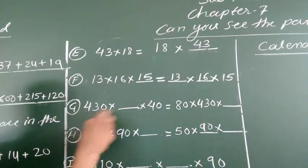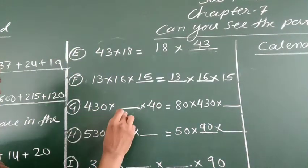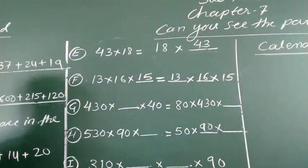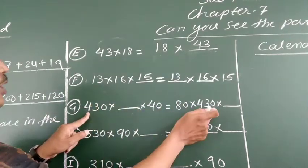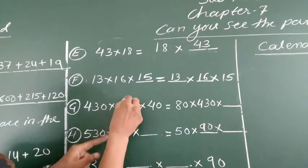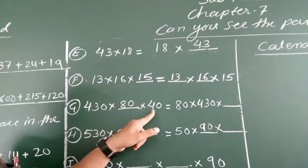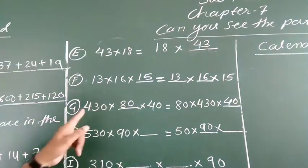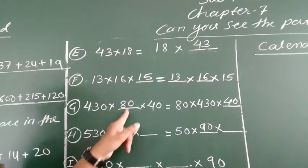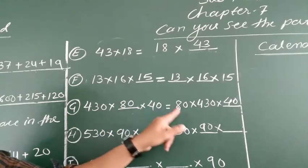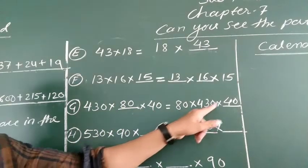Next: 430 into 80 into blank into 40 equals 80 into 430 into blank. The numbers are 430, 80, and 40. Here 80 is present on the right side, 430 is there, but 40 is not — so you put 40 in the blank. So: 430 into 80 into 40 equals 80 into 430 into 40.